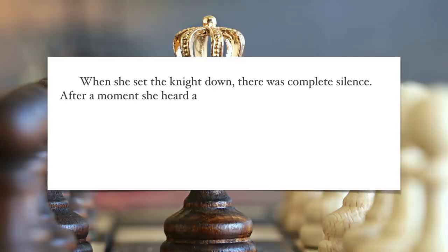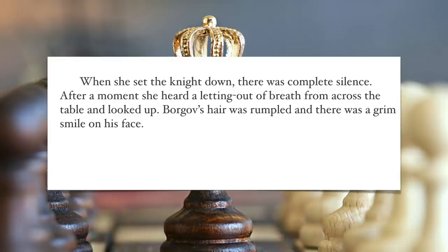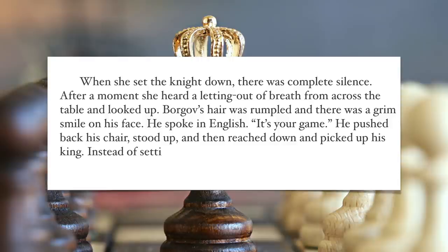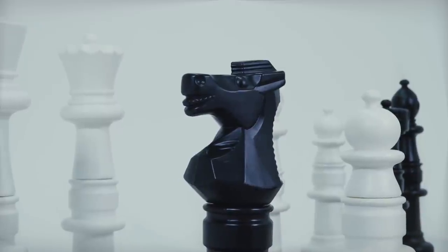After a moment, she heard a letting out of breath from across the table and looked up. Borgov's hair was rumpled and there was a grim smile on his face. He spoke in English: It's your game. He pushed back his chair, stood up, and then reached down and picked up his king. Instead of setting it on its side, he held it across the board to her. She stared at it. Take it, he said.